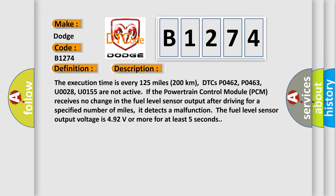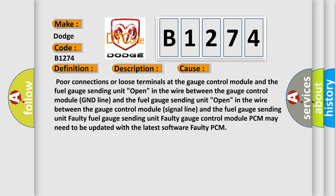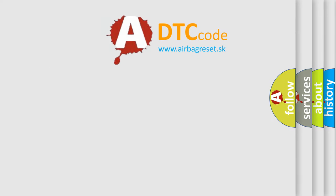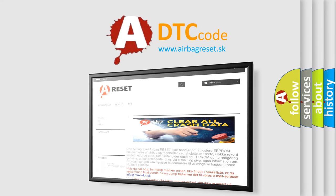The fault is detected when the fuel level sensor output voltage is 4.92 volts or more for at least five seconds. This diagnostic error occurs most often due to: poor connections or loose terminals at the gauge control module and the fuel gauge sending unit; an open in the wire between the gauge control module GND line and the fuel gauge sending unit; a faulty fuel gauge sending unit; or a faulty gauge control module — the PCM may need to be updated with the latest software, or the PCM itself may be faulty. Thank you for your attention and stay tuned for the next video.